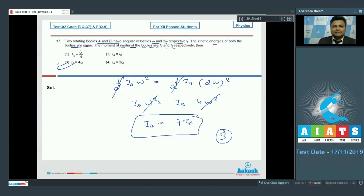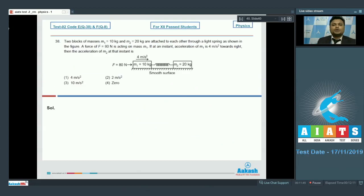Moving on to the next, that is number 38. Question number 38. Two blocks of masses m1 = 10 kilogram and m2 = 20 kilogram are attached to each other through a light spring as shown in the figure. A force F is equal to 80 Newton is acting on mass m1. If at that instant acceleration of m1 is 4 meter per second squared towards right, then find the acceleration of m2 at that instant. Now suppose the compression in the spring due to this force 80 Newton is x.